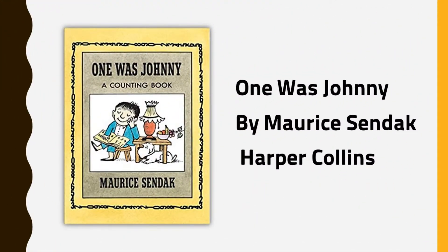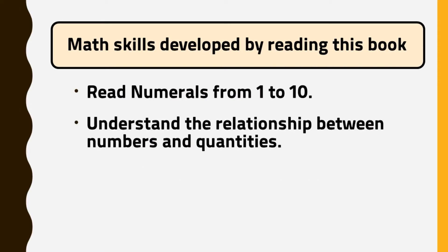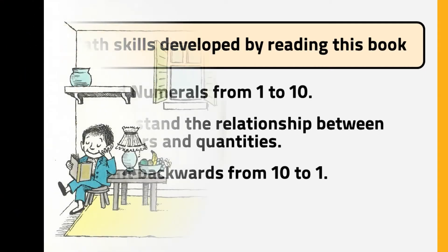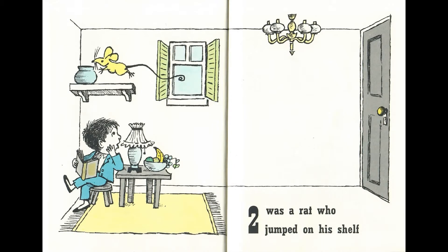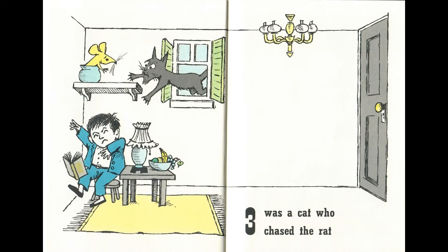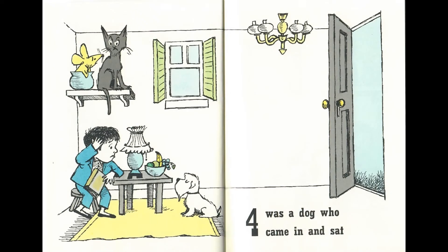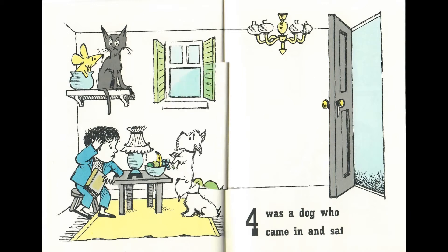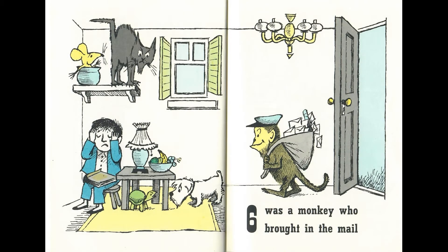One Was Johnny by Morris Sendak. One was Johnny who lived by himself. Two was a rat who jumped on his shelf. Three was a cat who chased the rat. Four was a dog who came in and sat. Five was a turtle who hit the dog's tail. Six was a monkey who brought in the mail.